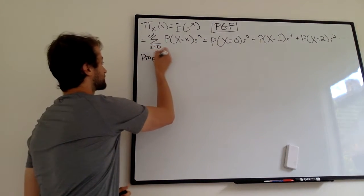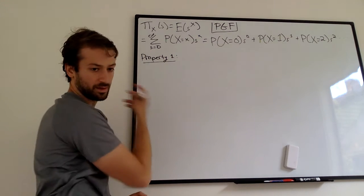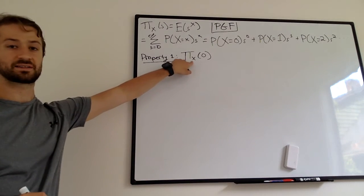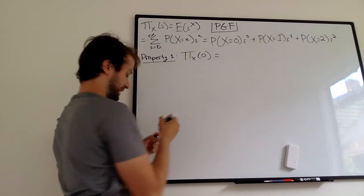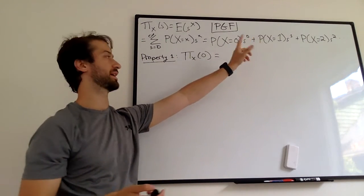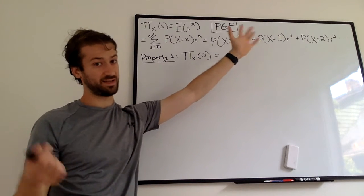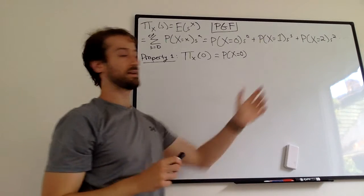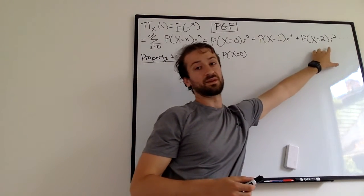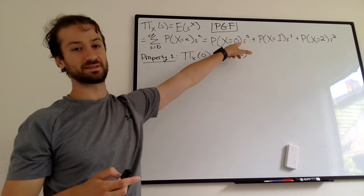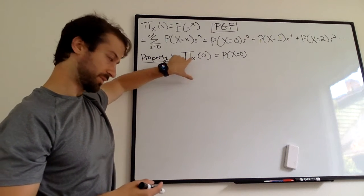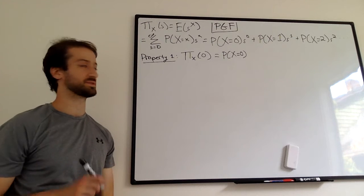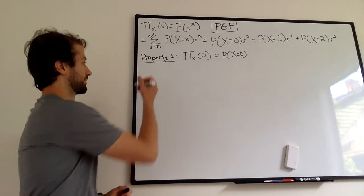Property one: let's see what happens when we plug in zero for s. Looking at our expansion, zero to the zero is one — anything to the zero is one — so we get P(X=0). Then s to the one becomes zero to the one, which is zero, so that term goes away. Zero squared is also zero, and all higher terms go away too. So π_X(0) equals the probability that X equals zero. This is a cool little property — you can use it to quickly find P(X=0), and I use it to verify that you have a valid PGF.